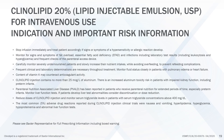8. Content of vitamin K may counteract anticoagulant activity. 9. Clinolipid injection contains no more than 25 micrograms per liter of aluminum. There is an increased aluminum toxicity risk in patients with impaired kidney function, including preterm infants. 10. Parenteral nutrition-associated liver disease has been reported in patients who receive parenteral nutrition for extended periods of time, especially preterm infants. Monitor liver function tests. If patients develop liver test abnormalities, consider discontinuation or dose reduction. Reduce doses of clinolipid injection and monitor serum triglyceride levels in patients with serum triglyceride concentrations above 400 mg per deciliter.